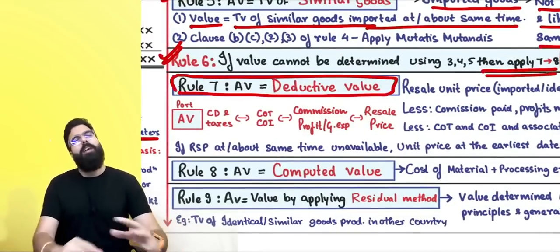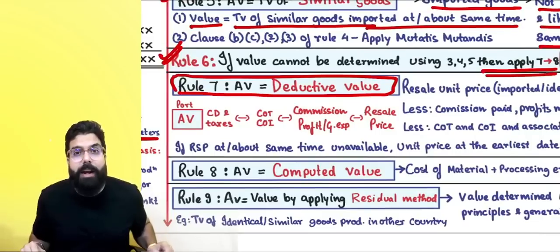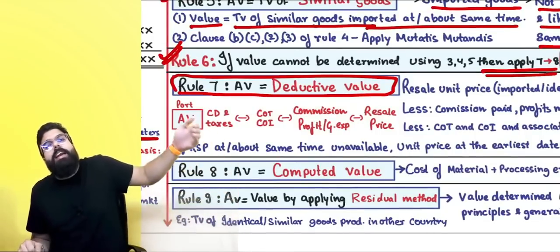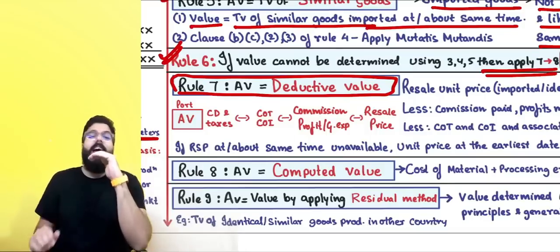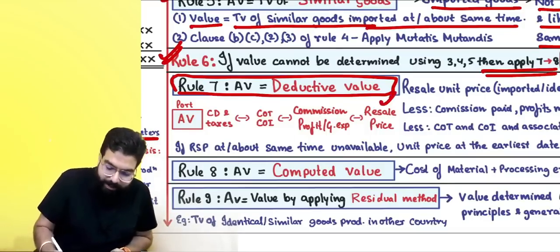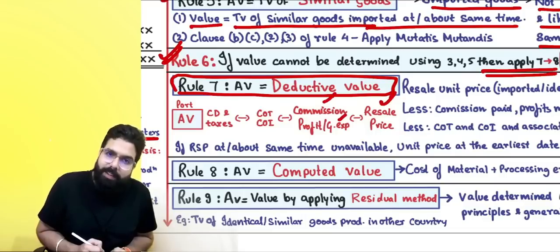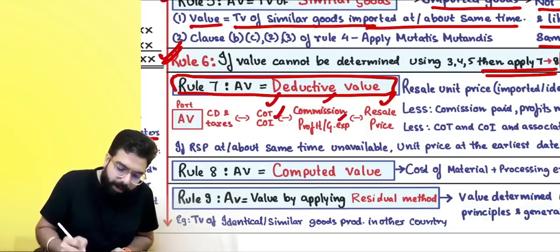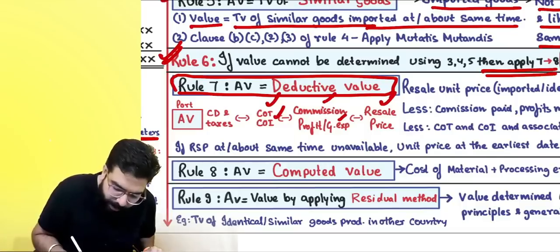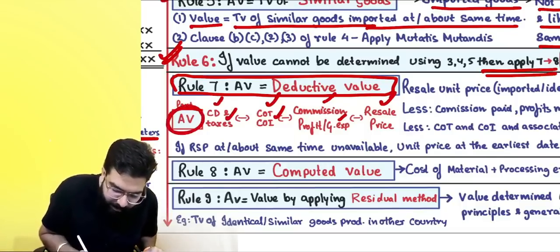Rule 6 says: if you can't apply Rule 3, 4, or 5 — your transaction value was not accepted and identical or similar goods are not available — apply Rule 7 or 8. An important point: at the importer's request and with proper officer approval, the order can be changed — you can apply Rule 8 first and then Rule 7.